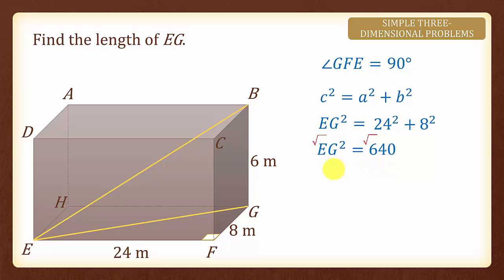To find EG we shall square root on both sides and we will have EG equals to 25.3 meters rounded off to three significant figures.